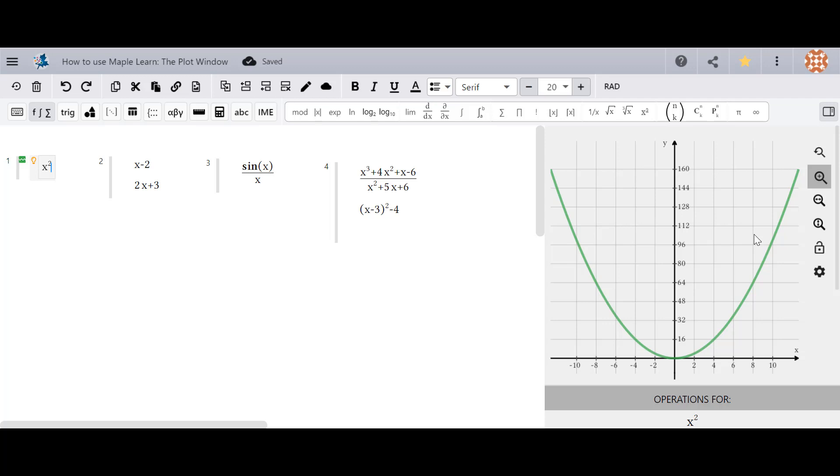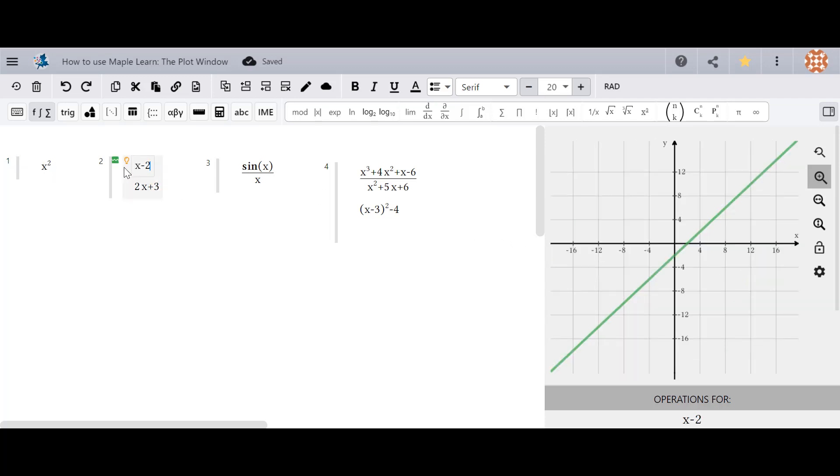Only the equations and functions in the selected group will appear in the plot. Click on different groups to select them and see the graphs of the equations that have been entered into them.